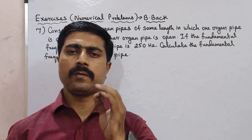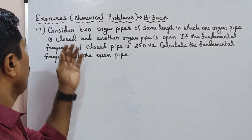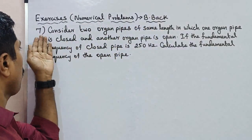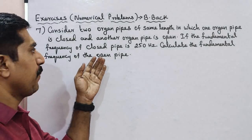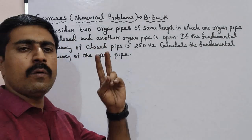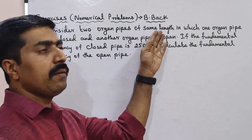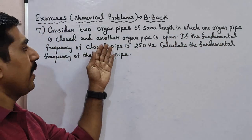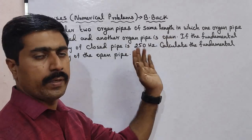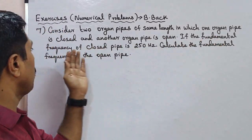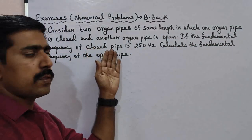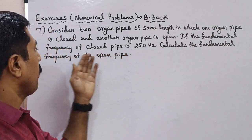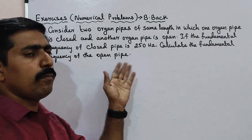Hi students, now we are going to talk about a simple problem. Exercises are the numerical problems — Book bag 11, problem number 7. Consider two organ pipes of same length in which one organ pipe is closed and another organ pipe is open. If the fundamental frequency of closed pipe is 250 Hz, calculate the fundamental frequency of the open pipe.